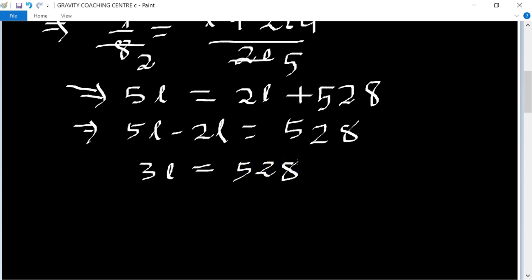Therefore L equals 528 upon 3. Dividing 528 by 3, we get 176. So length of the train is 176 meters.